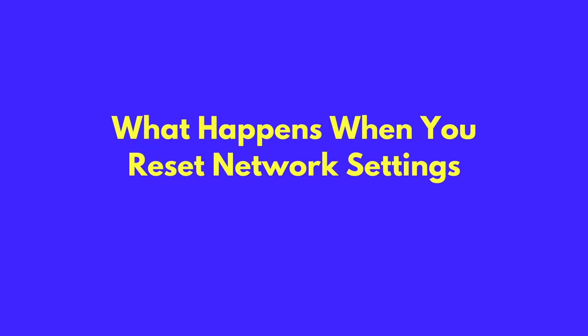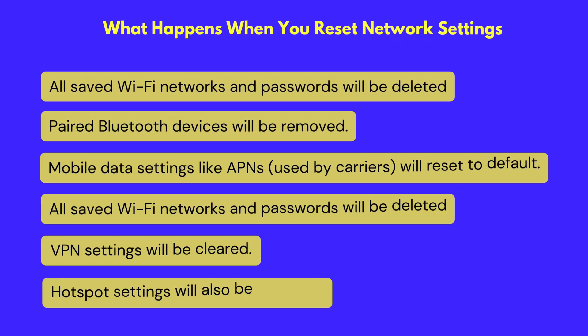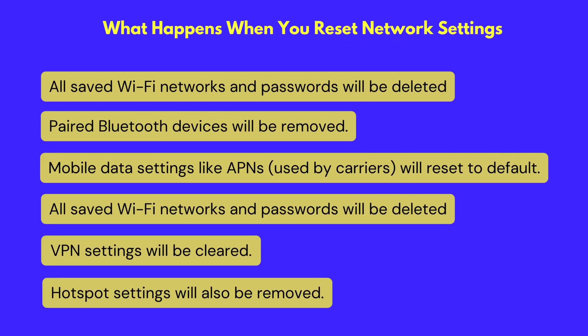What happens when you reset network settings on your Android phone? All saved Wi-Fi networks and passwords will be deleted. Paired Bluetooth devices will be removed. Mobile data settings like APNs, used by carriers, will reset to default. VPN settings will be cleared.